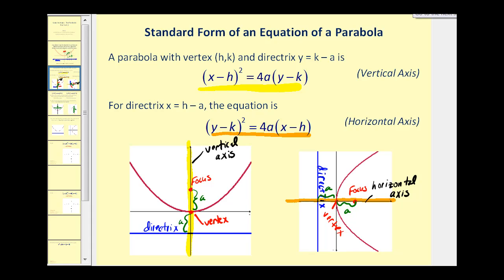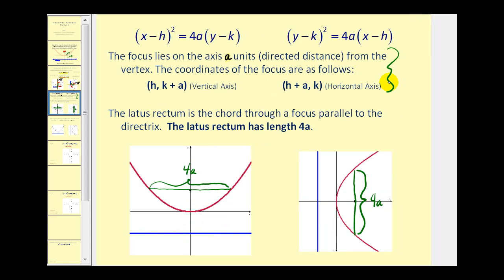There's one more thing we want to mention before we try to graph some of our own. These notes formalize what we just said about how to determine the coordinates of the focus as well as the equation of the directrix. The last thing we want to talk about is the latus rectum, and this is the chord through a focus parallel to the directrix, as we see here in green for a vertical axis and horizontal axis. It has a length of 4a, and this will tell us how wide or how narrow our parabola will be.